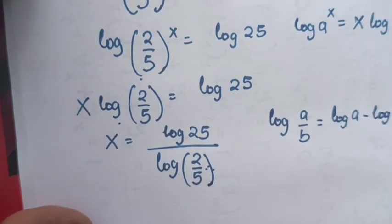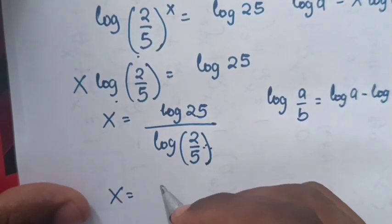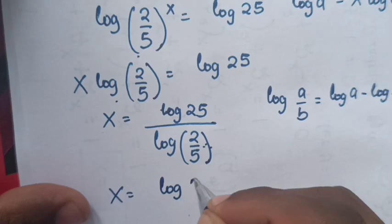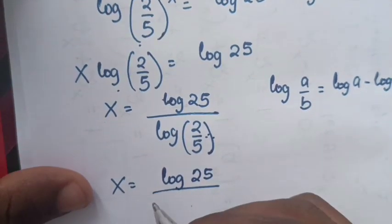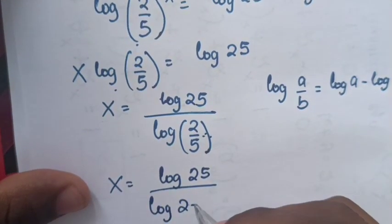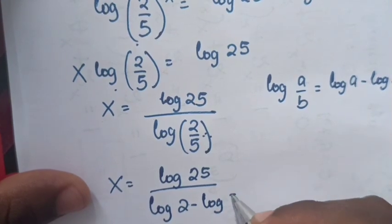Then from here, the value of x will be log 25 over log 2 minus log 5.